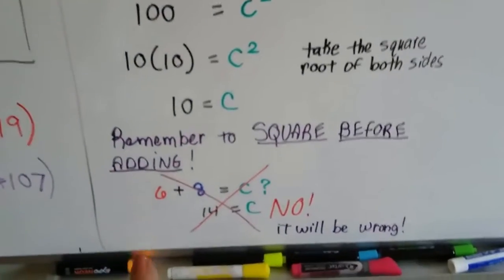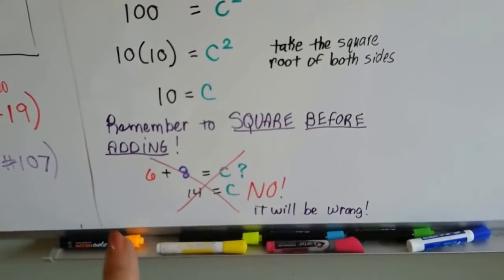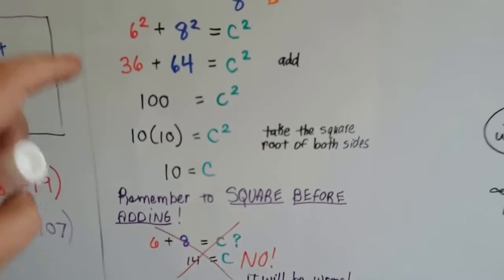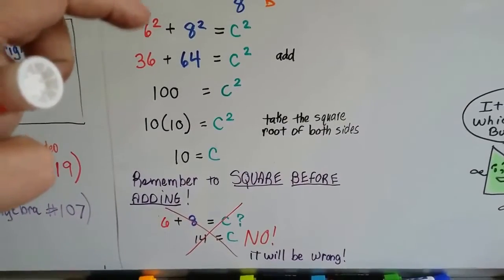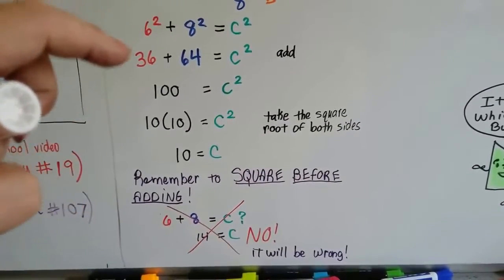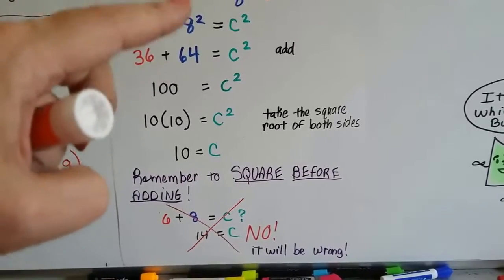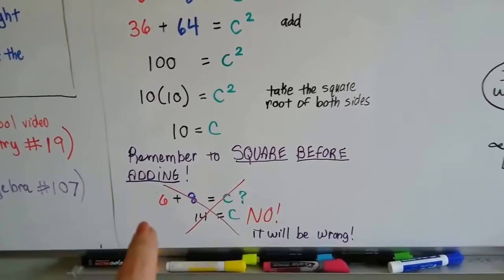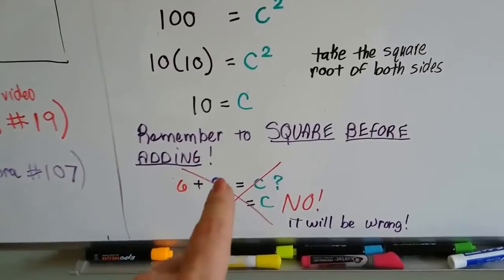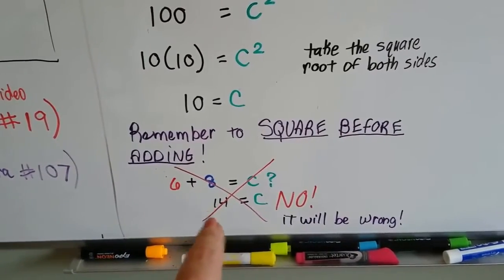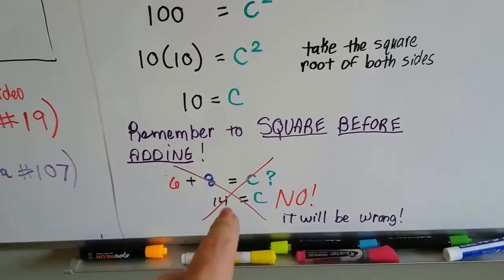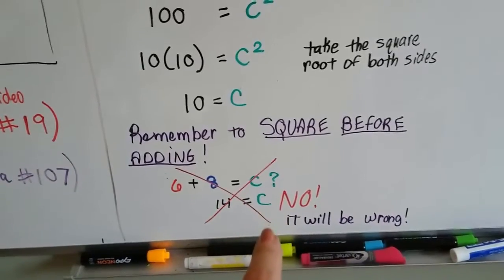Now, it's really important that you remember to square before adding. We did 6² + 8² = c², and then we found out what they were: 6 × 6 and 8 × 8. If we had just done 6 + 8, that would be 14. And c is not equal to 14 – it would be wrong.